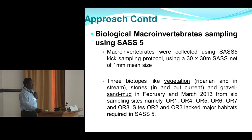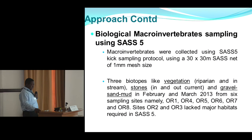In terms of sampling macroinvertebrates, the protocol used involved three types of biotopes: vegetation — both riparian and in-stream; stones whether in or outside the current; and gravel, sand, and mud. That covers the sampling period we had.